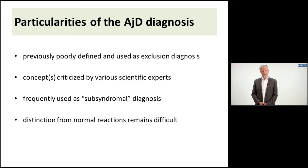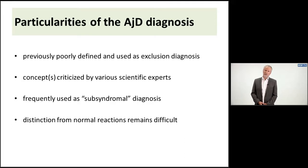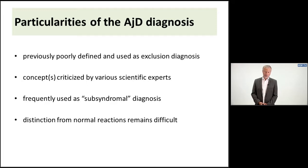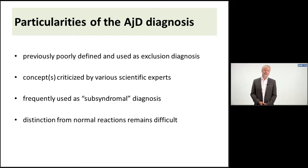There are still, until today, some particularities of the adjustment disorder diagnosis. It remained poorly defined and only used as an exclusion diagnosis in the previous diagnostic systems, most prominently the DSM. It had been criticized by several experts for its poor definition and for other aspects like reliability and validity. On the other hand, it is frequently used as a diagnosis, often for subsyndromal cases, which may create difficulty for the classification system. The distinction from the normal reaction and adjustment disorder also remains sometimes difficult.